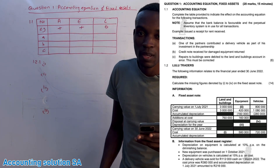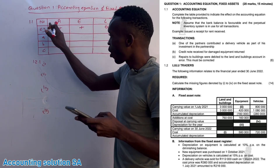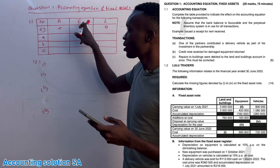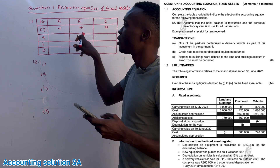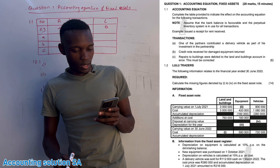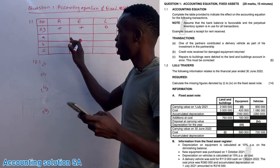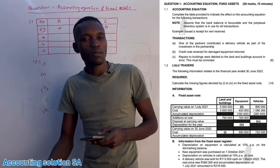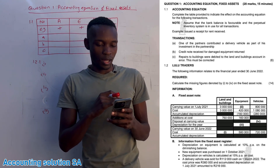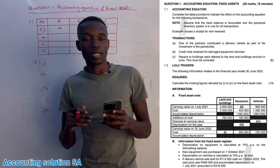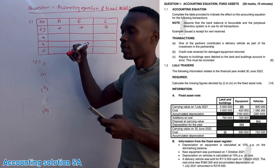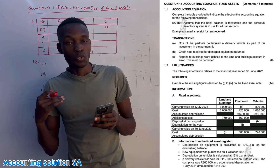They give us an example: a receipt was issued for rent received. In other words, we received rent income, so bank increases. Rent income is an income, and when income is affected it affects equity and it must be a plus. If it's an expense it will be a minus. This is how they want you to indicate — no name or amount is needed.